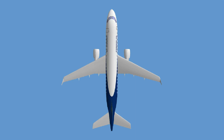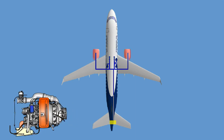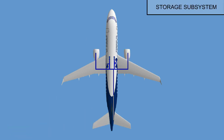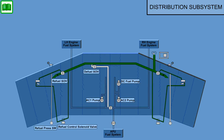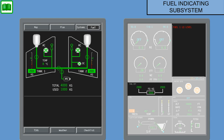The fuel system is designed to provide fuel to both engines and the APU. The fuel system consists of three subsystems: the storage subsystem, which includes vented integral fuel tanks in the aircraft wings; the distribution subsystem, which permits operations like engine feeding, APU feeding, and tank refueling and defueling; and the fuel indicating subsystem, which provides indications and failure information to the crew and maintenance personnel.